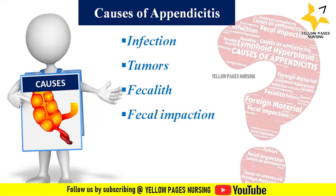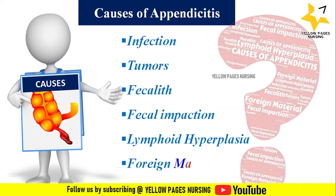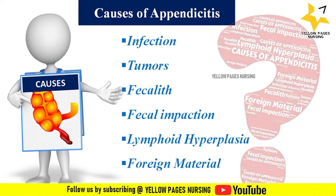Other causes include fecal impaction — a layered buildup of calcium salts and fecal debris around a piece of fecal material within the appendix. Next, lymphoid hyperplasia — the appendix contains lymphoid tissue that can become inflamed as a result of infection or inflammatory bowel disease. Finally, foreign material — a wide variety of foreign objects can become lodged in the appendix, such as shotgun pellets, intrauterine devices, and tongue studs.